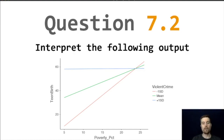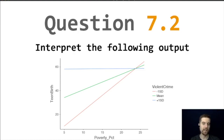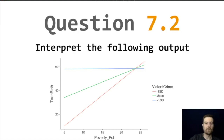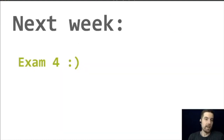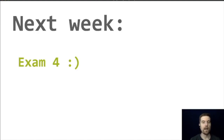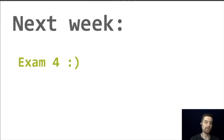If this were on an exam, I'd piece apart each group: describe the relationship between poverty and teen birth rate for low violent crime, then for mean violent crime, then for high violent crime. That would be a good interpretation. Up next is exam four — please post any questions to the discussion board so we can address them before the exam. I look forward to making sure you're walking away from this class with the ability to select a method and interpret the results.